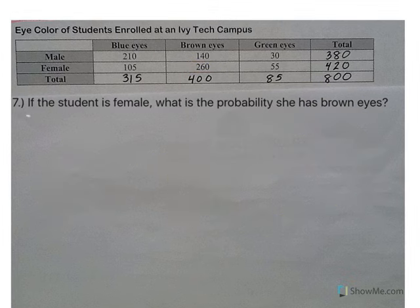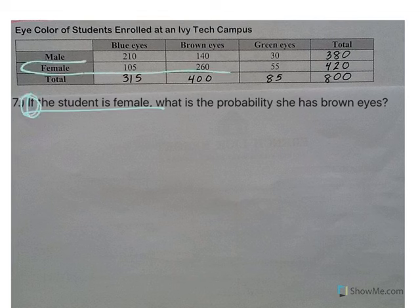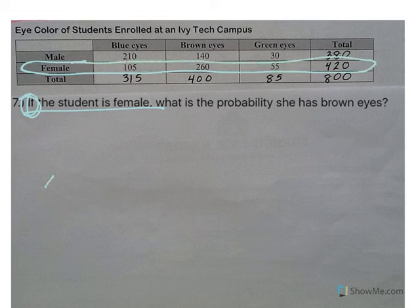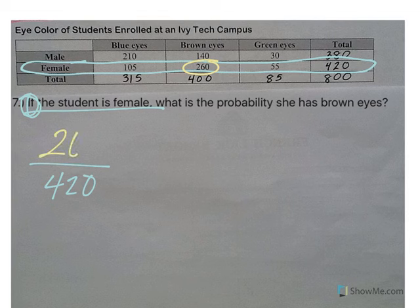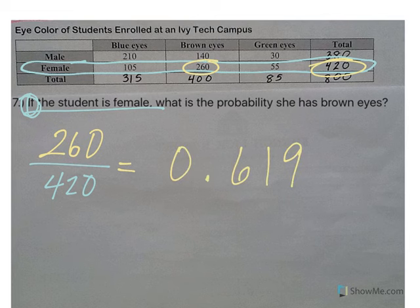Number seven: if the student is female — now we're getting into conditional probability with the word 'if.' That means we only care about the female students, so the denominator is 420. What's the probability she has brown eyes? Looking at the female row, brown eyes is 260. So we have 260 over 420, which gives 0.619.